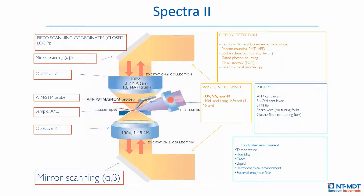Another additional optical access is side illumination. This is not a common configuration because when you do side illumination, the confocal Raman becomes somewhat non-confocal — the shape of the laser spot becomes more elliptical rather than circular, which raises questions about the data obtained.